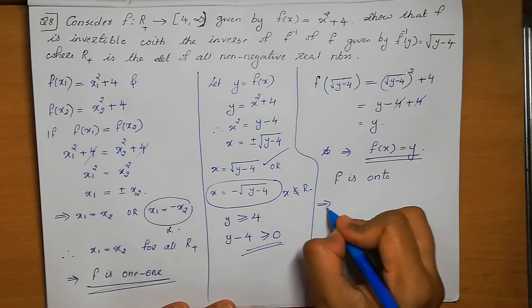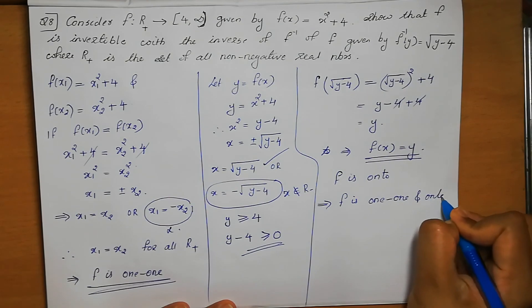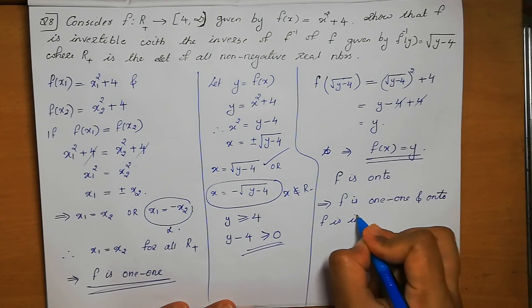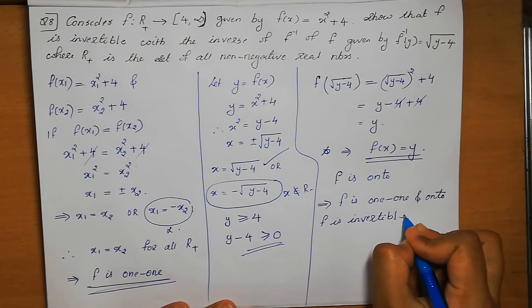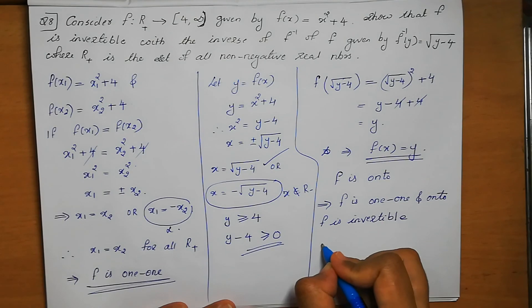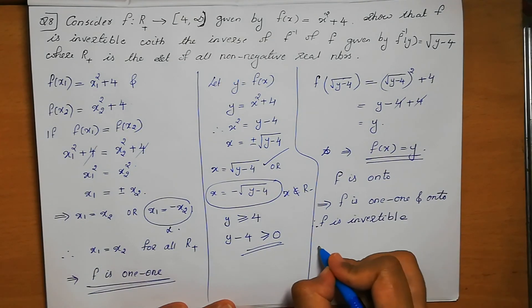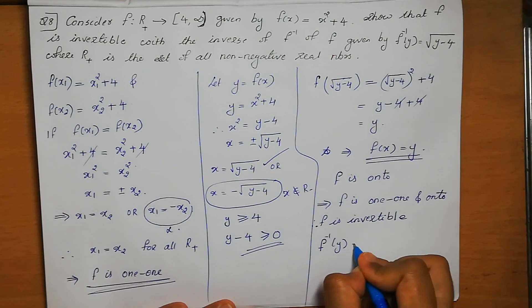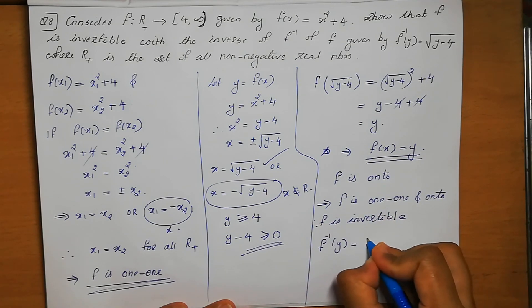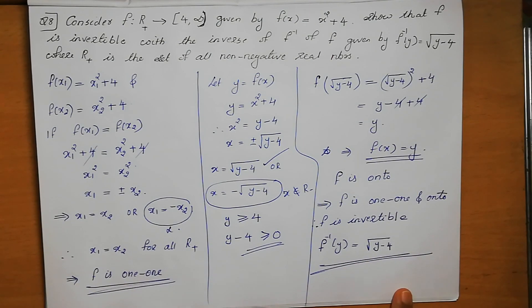So f is 1-to-1 and onto, therefore f is invertible. The inverse of f is f⁻¹(y) = √(y-4). This is the answer.